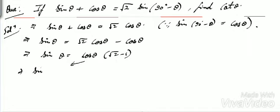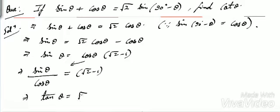Now, we will take cos θ to the denominator. Sin θ / cos θ = √2 - 1. So sin θ / cos θ is what? Tan θ. So tan θ = √2 - 1.